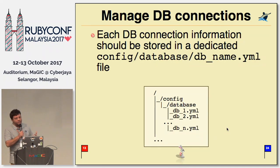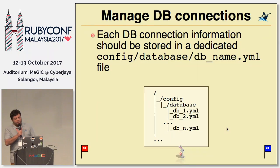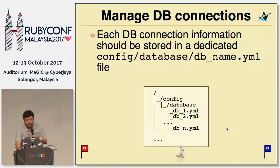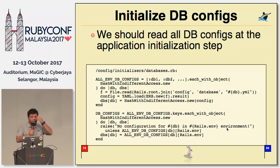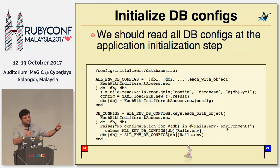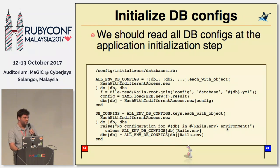First of all, he advised us to manage database connections properly and organize them so that each database connection information should be stored in a dedicated config in the config/database_dbname.yml file. Each database should have its own config. We should initialize DB configs at the Rails application initialization step. Here is a piece of code from our databases initializer which simply reads all the configs for all databases we are interested in and checks if they have configs for a given environment.